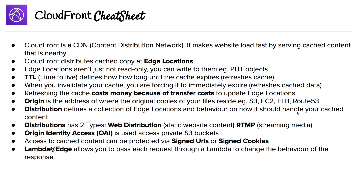Then we have origin access identity, which is used to access private S3 buckets. If we want to access cached content that is protected, we need to use signed URLs or signed cookies. Don't confuse signed URLs with pre-signed URLs, which is an S3 feature, but they're pretty much the same in terms of giving you access to something.